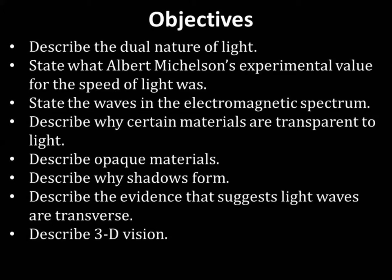The objectives are: describe the dual nature of light, state what Albert Michelson's experiment value for the speed of light was, state the waves in the electromagnetic radiation spectrum, describe why certain materials are transparent to light, describe opaque materials, describe why shadows form, describe the evidence that suggests light waves are transverse, and describe 3D vision.